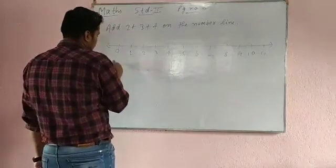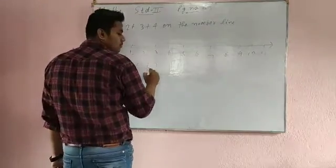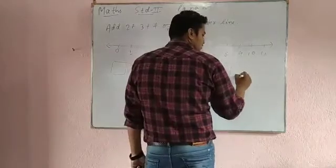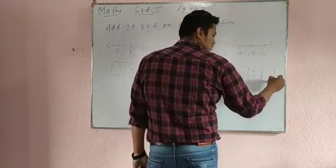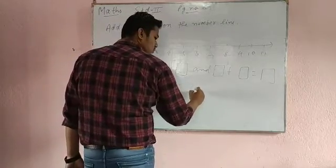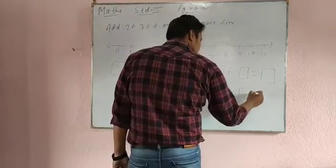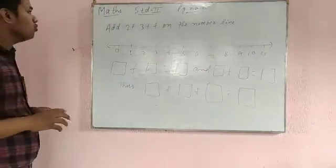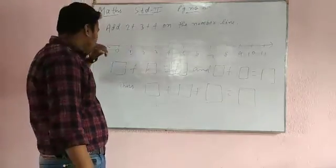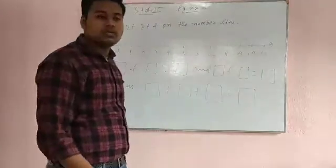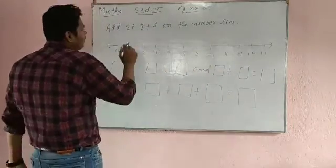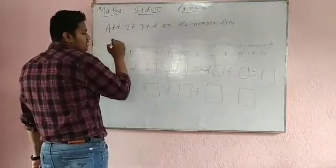So guys see, first it starts from two. So there you can see, you have to add two plus three plus four on the number line. So first, you just simply add it in your mind that two plus three equals five, five plus four equals nine. So when you are going to draw number line, it should be more than nine. You can take ten or eleven, but it should be more than nine. So see, first is two. So I told you, whenever the first number is there, you have to start from zero to two.